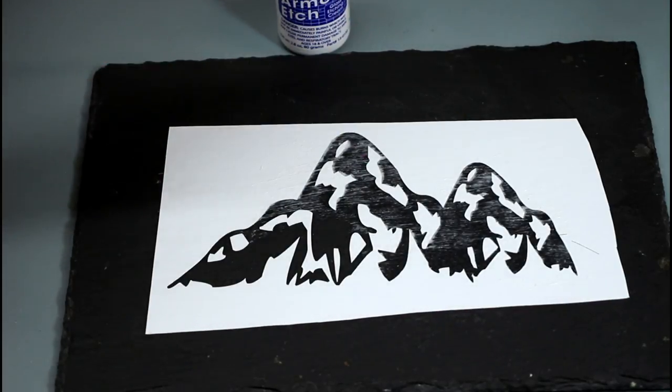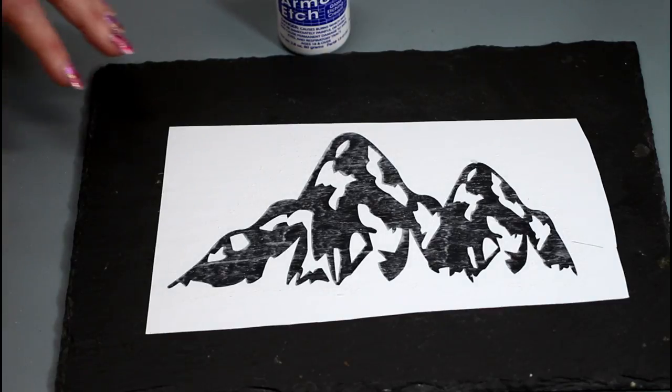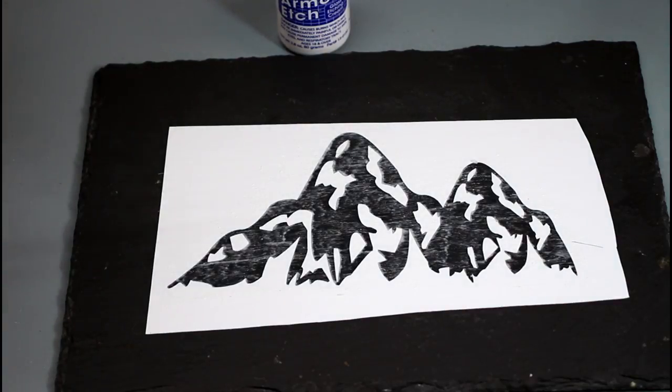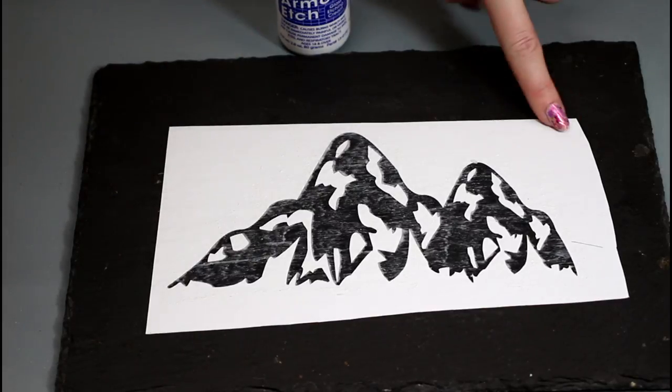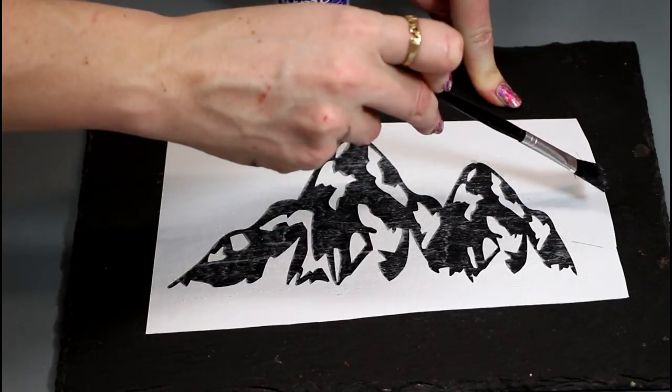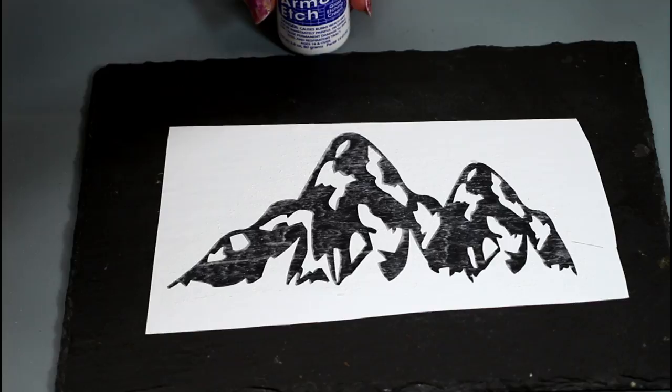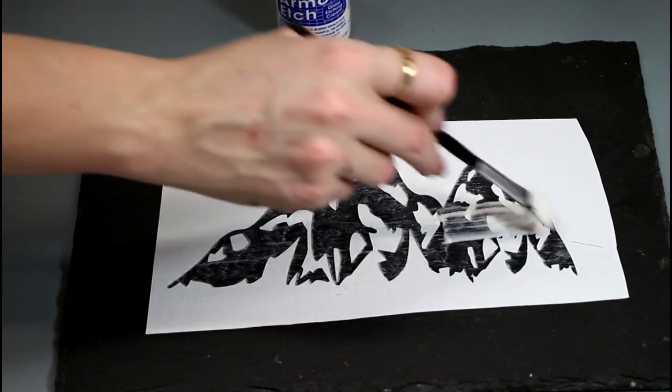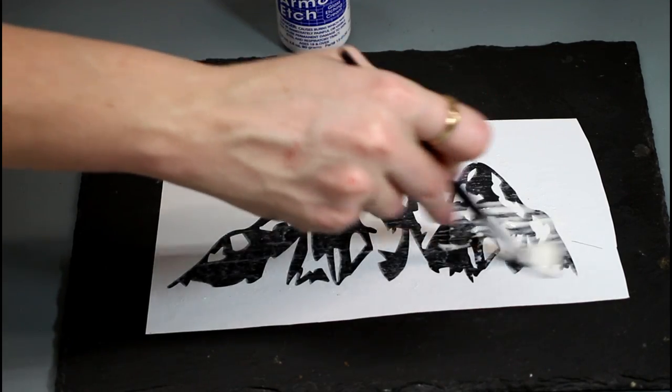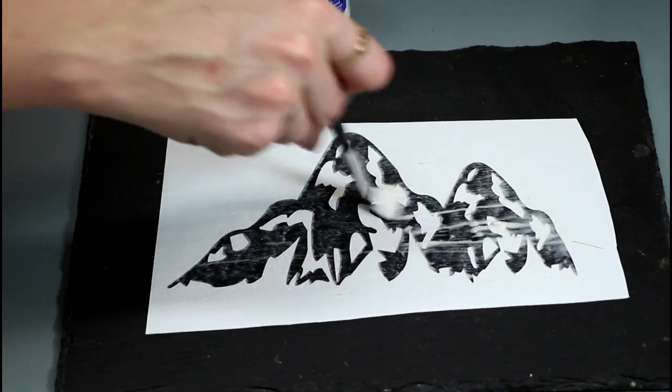Once my thin layer is done, I then go in with a thicker layer, and again you want it to be as even as possible. And you'll also see I've got quite a large border around my design. This is just to stop my brush going over the edge onto the slate. We don't want that either. So as I say, I first go in with a thin layer and then I go over the top with a thicker layer. And again, you do want to try and be as even with this as possible.